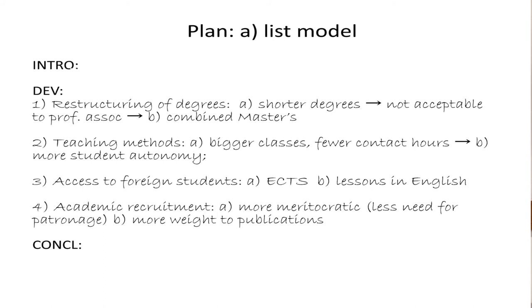In a short essay of the kind that you'll be asked to write here as an assignment, each of the sections of your plan would correspond to a paragraph of 50 or 100 words. So the essay using the list model that we planned earlier would basically have six paragraphs: four in the body, and one each for the introduction and conclusion. The first part of each point would become the topic sentence, and the rest would come after as part of the development of that idea. If on the other hand you're writing a book or a thesis, each of these points would become a separate chapter.